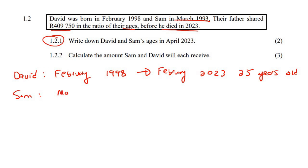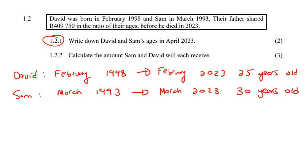Sam was born in March 1993. Going to March of 2023, that would be 30 years old. Since it's April, Sam has already had his birthday, so we don't need to worry about whether the birthday has passed. So those are the ages of both individuals.